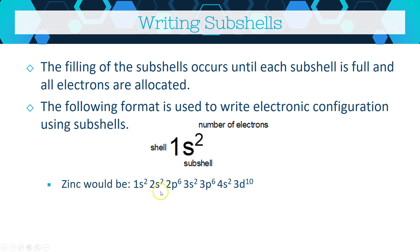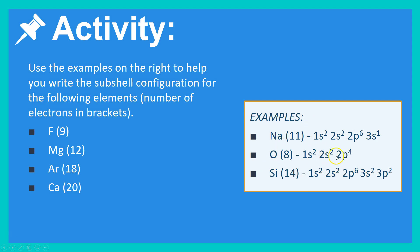Here are some examples. Sodium has 11 electrons: 1s² 2s² 2p⁶ 3s¹ (that's 2+2+6+1=11). Oxygen has 8 electrons: 1s² 2s² 2p⁴. Silicon has 14 electrons: 1s² 2s² 2p⁶ 3s² 3p² (that's 2+2+6+2+2=14). Pause the video and try working out the subshell configurations for fluorine, magnesium, argon, and calcium.